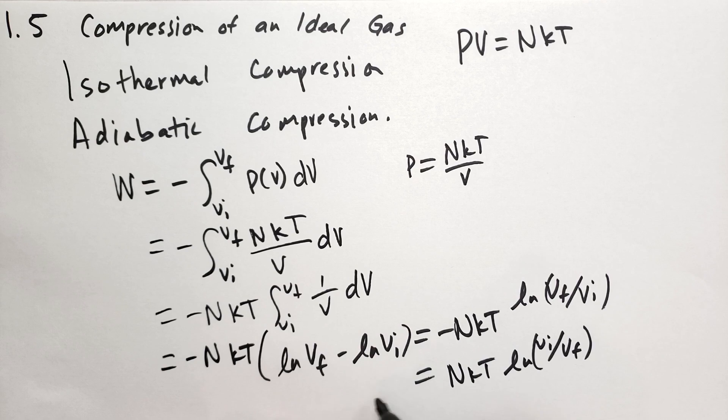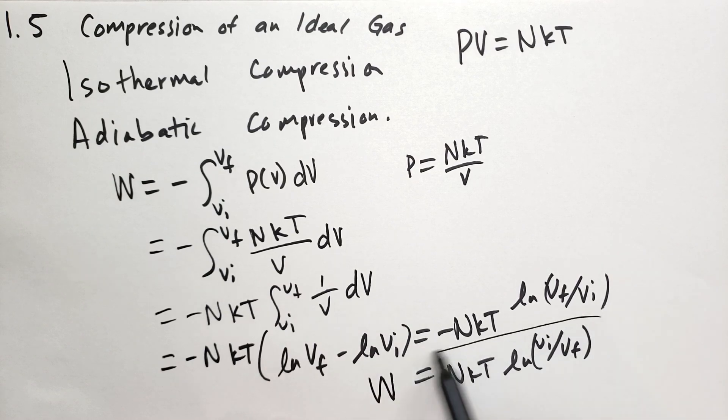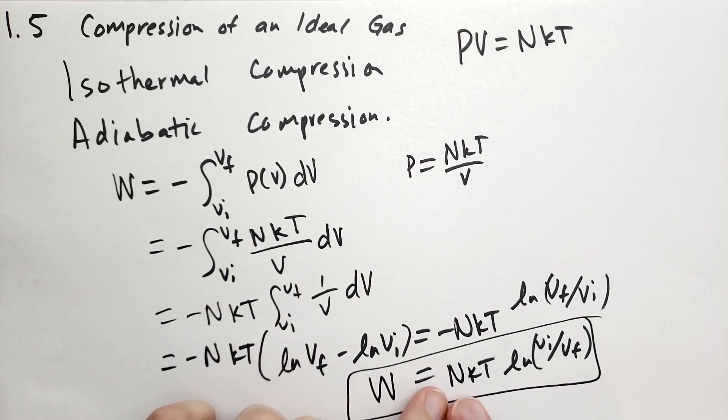So NKT, the work done on a gas, the energy entering into the system of the gas is the number of particles of the gas times Boltzmann's constant times the temperature, which is held constant times the log of the initial volume divided by the final volume.